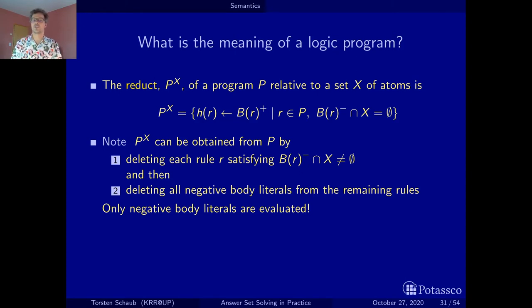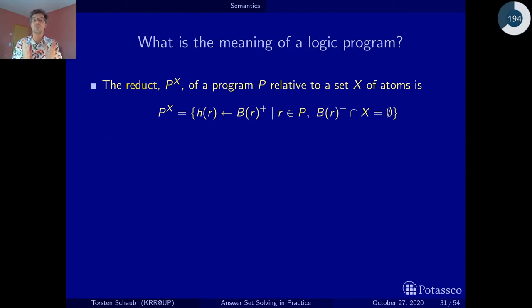Before I do that, I should actually mention this. I'm so excited about introducing to you the stable model semantics, that keep in mind that when we do the reduct and we transform the program into a positive logic program, we only evaluate the negative body results and they are then also more or less stripped of the program that results from this. Now, finally, with the reduct we can define what a stable model is.